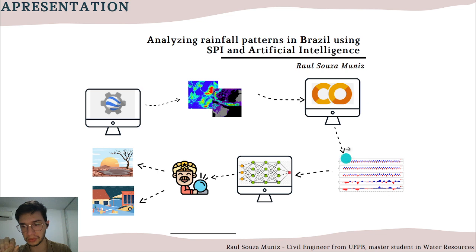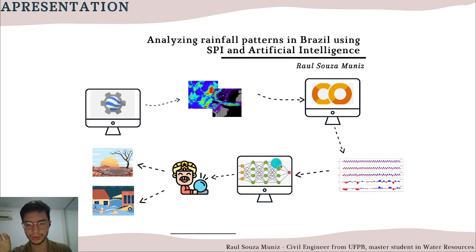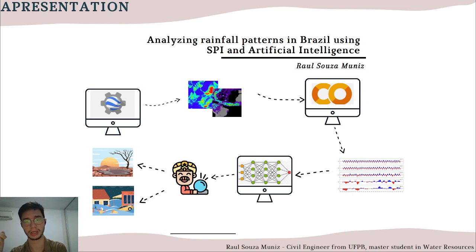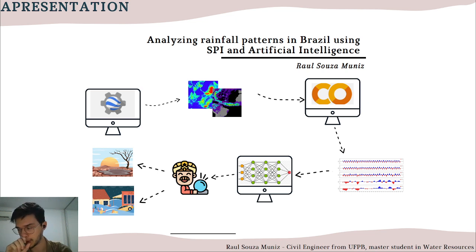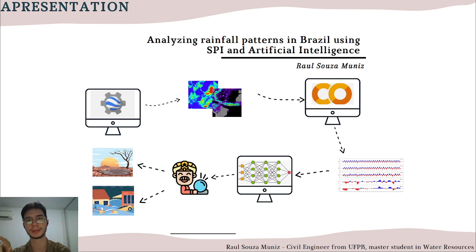We are going to calculate the SPI index and put this index in a data series format. Then we will try to predict the SPI in a critical area — the northeast of Brazil — which is a region where drought is likely to occur. We will try to predict when drought will occur by using the SPI and artificial intelligence. That's the idea.